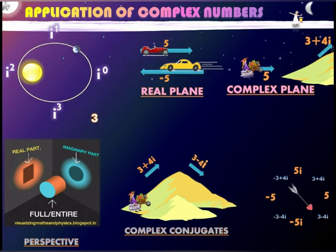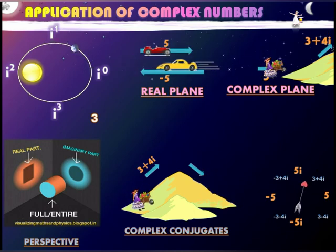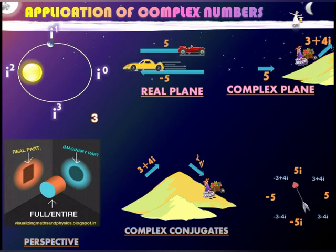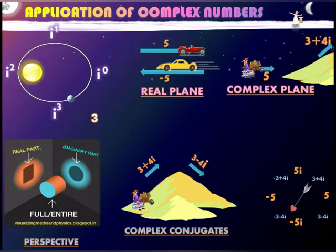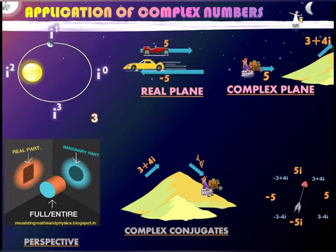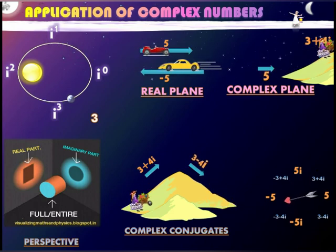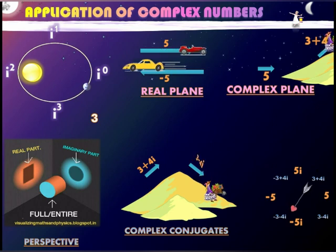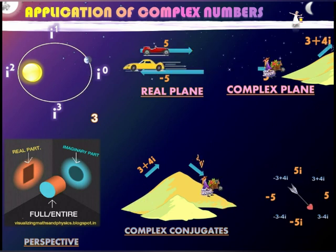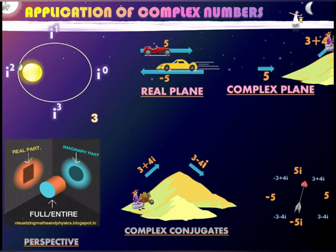Complex conjugates represent vertically opposite mirror images of each other. Three plus 4i means moving in a positive angle of tan inverse of four divided by three — approximately 53 degrees — while three minus 4i means moving downwards at the same angle.